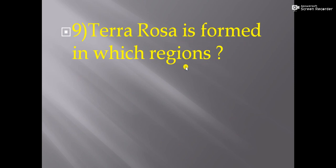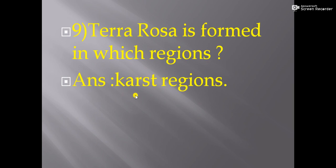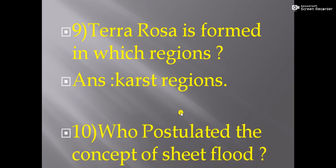Next question is: in India, which rain occurs maximum? The answer is orographic rain. Next question is: Terra Rosa is formed in which region? The answer is the karst region. We all know the karst region is mainly made of limestone.